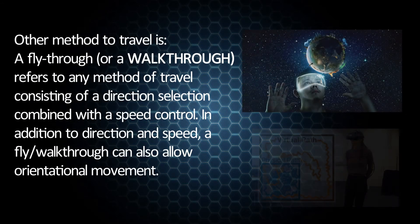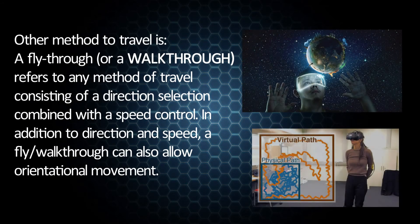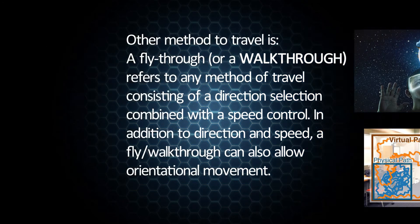Another method of travel is a fly-through or walk-through, which refers to any method of travel consisting of a direction selection combined with a speed control. In addition to direction and speed, a fly-through or walk-through can also allow orientational movement.